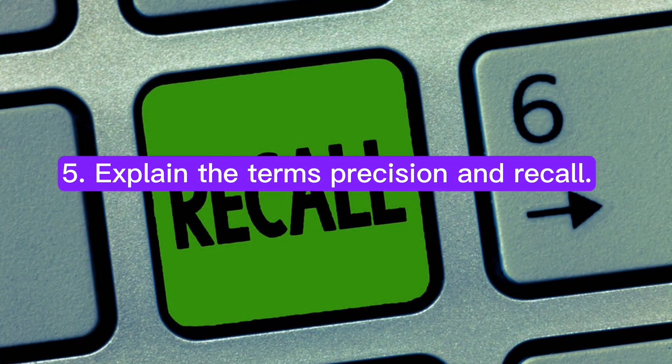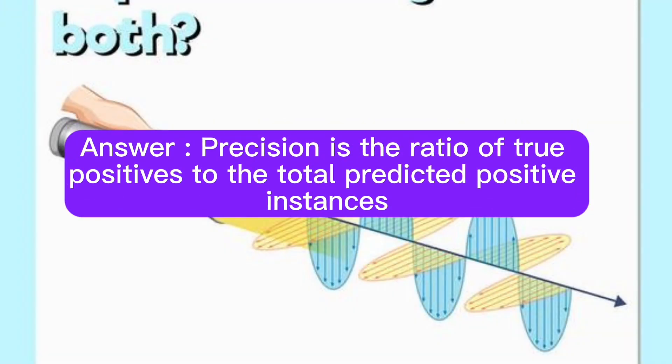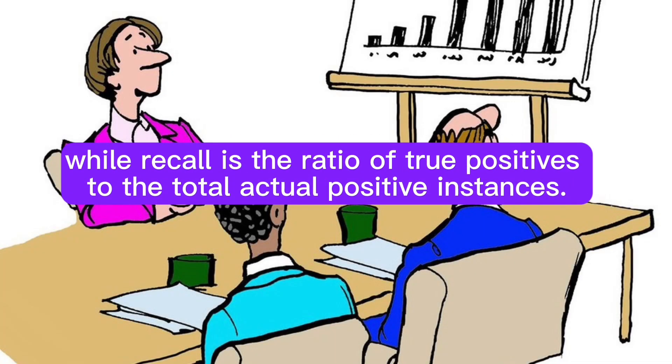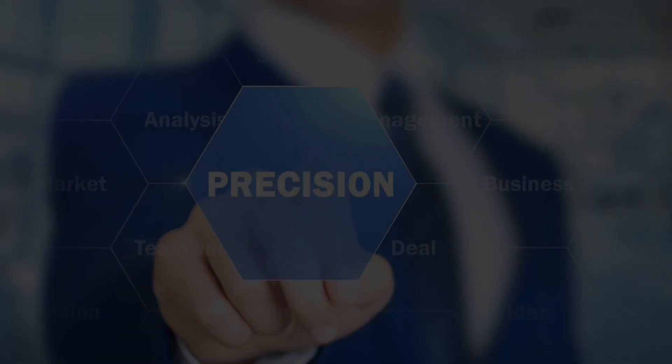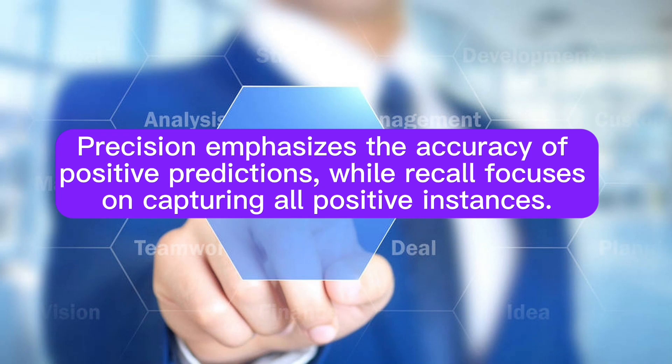Question 5: Explain the terms precision and recall. Answer: Precision is the ratio of true positives to the total predicted positive instances, while recall is the ratio of true positives to the total actual positive instances. Precision emphasizes the accuracy of positive predictions, while recall focuses on capturing all positive instances.